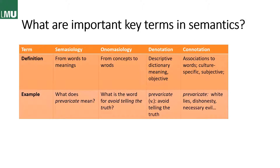Then we have connotation, which are the associations excluded from the denotation. They are often culture-specific or subjective, based on your own experiences. For 'prevaricate,' things people might think of include white lies, dishonesty, or that it is a necessary evil, and so on and so forth.